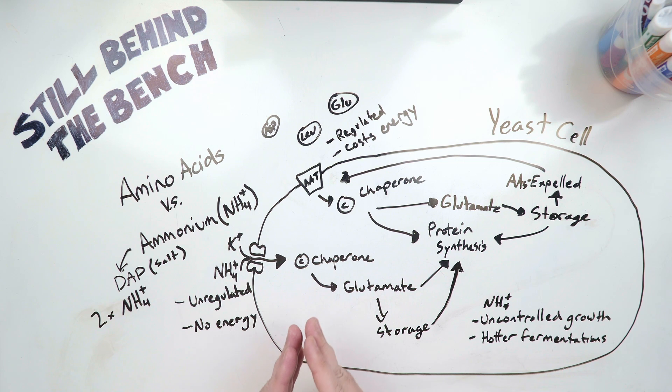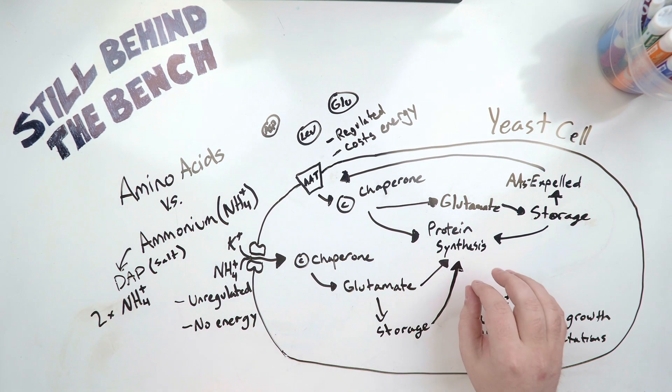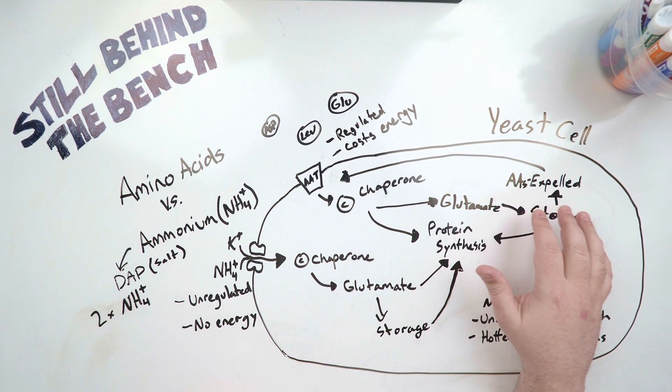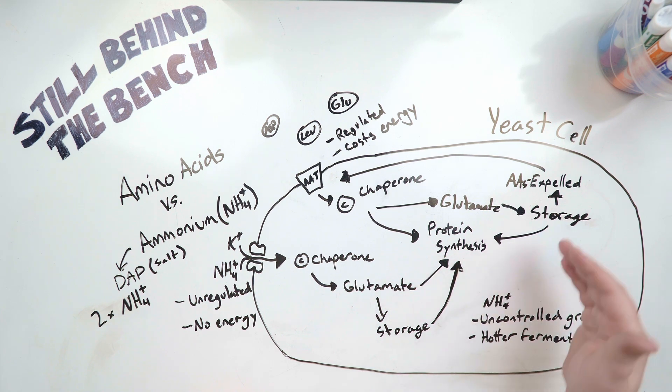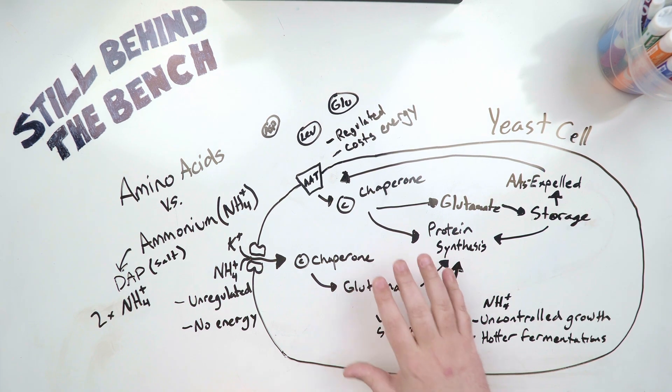Now if you do put in too much nitrogen, the yeast cell can detect it. But what happens is the yeast cell will start expelling some of that nitrogen. However, it can only expel it as amino acids. It cannot expel ammonium ions. This can be problematic if the cell starts expelling amino acids that it currently needs to create a certain protein, right? Because it'll need to create new amino acids and that's just more growth.